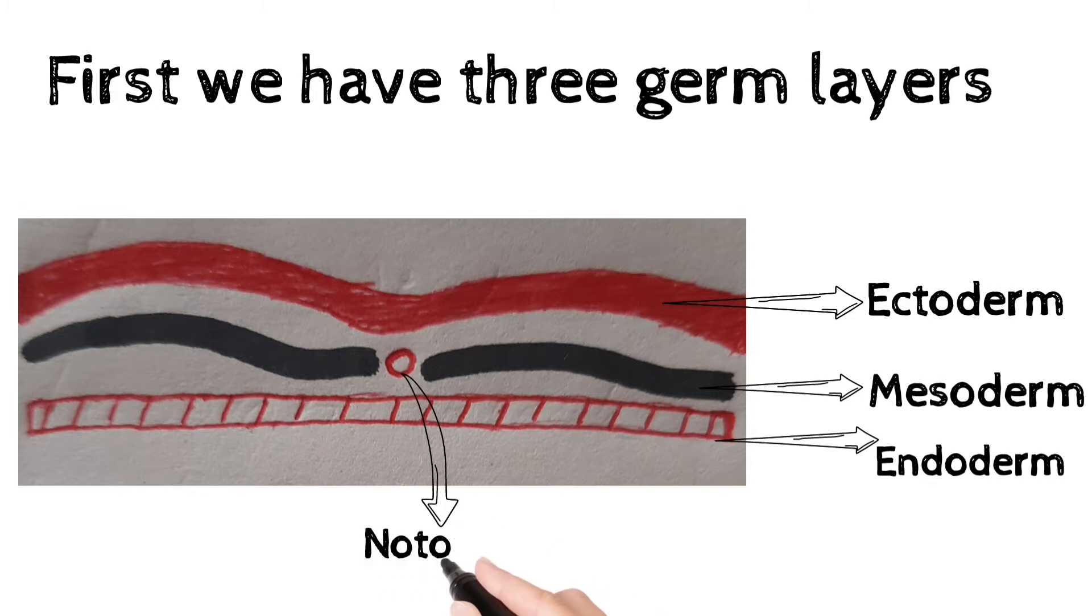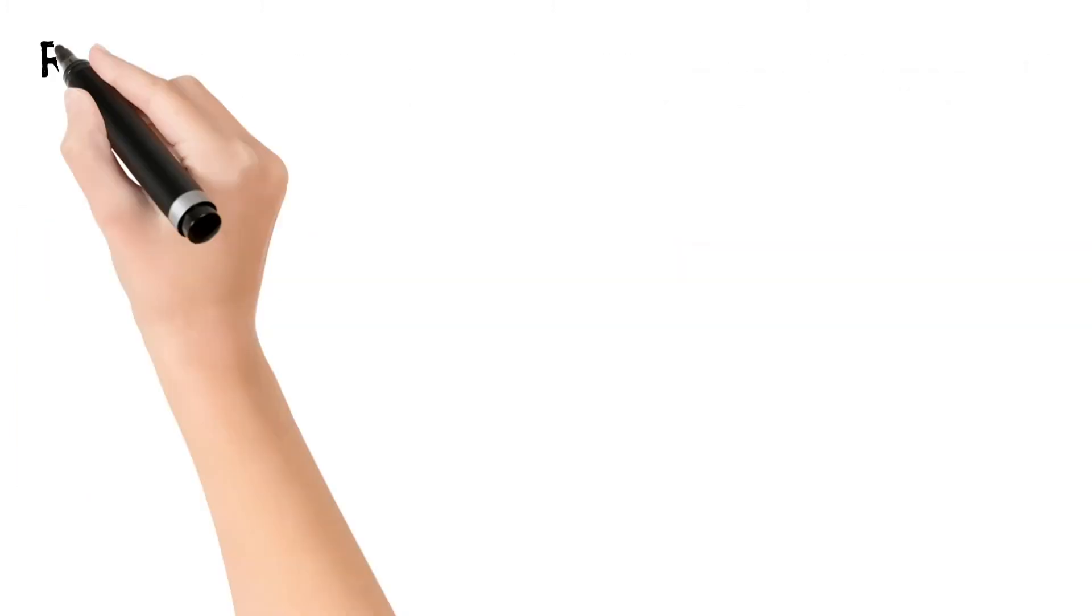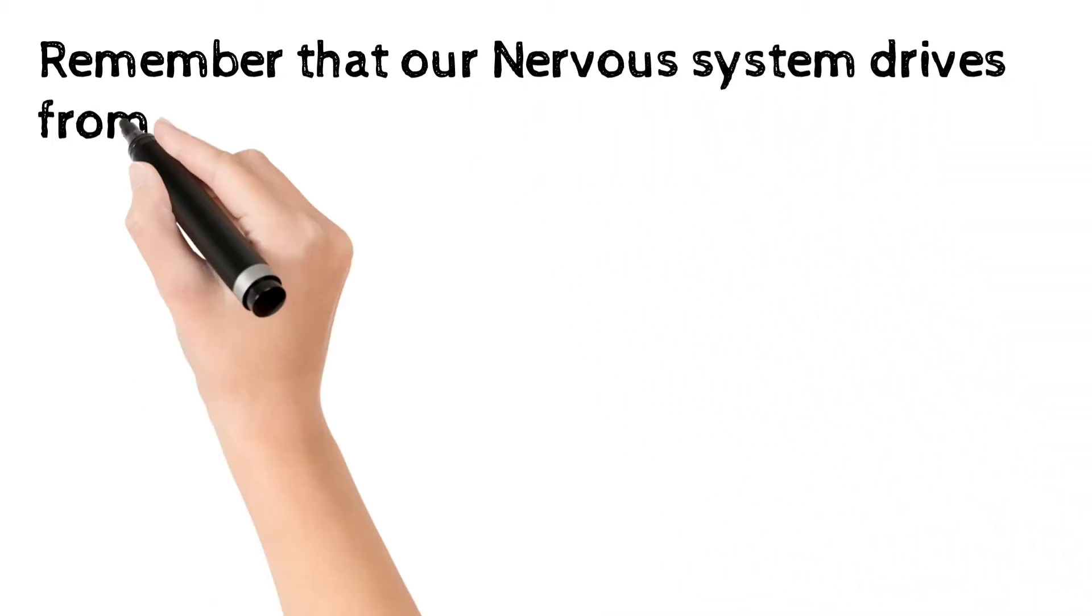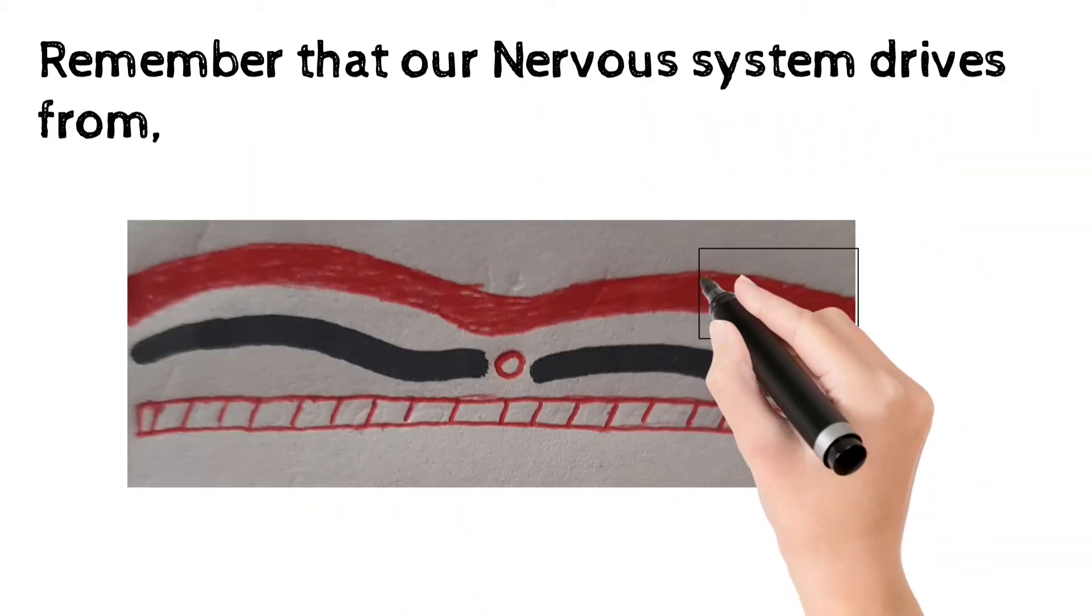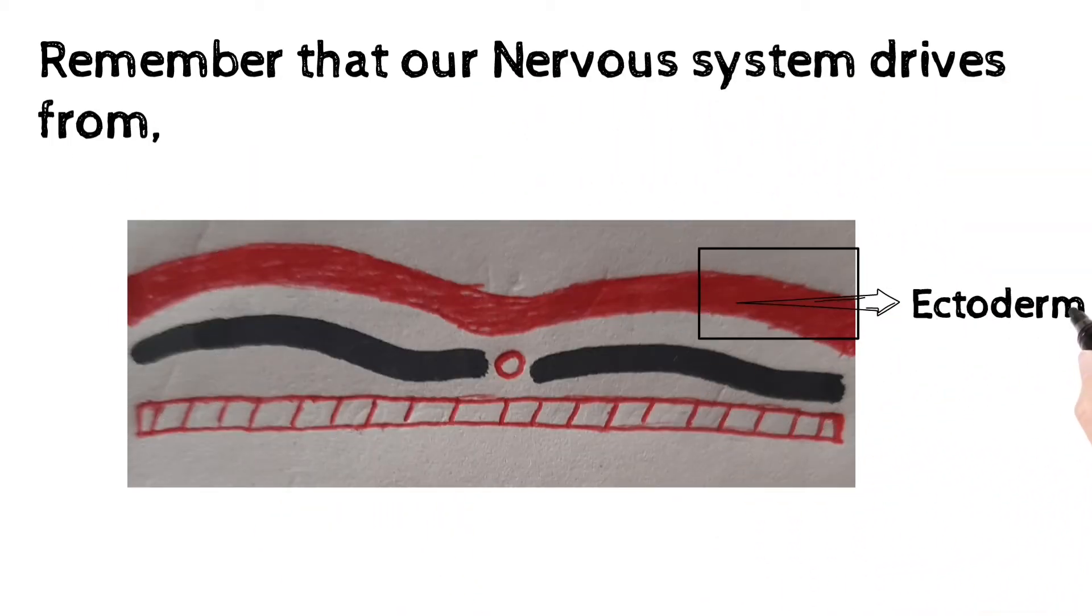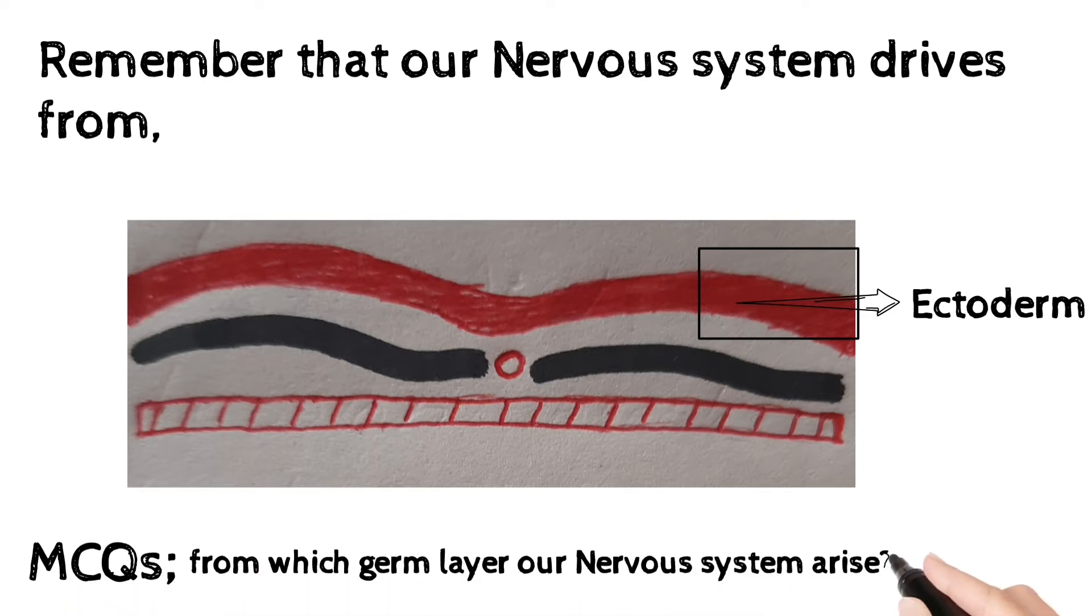That is notochord. Remember, that nervous system derived from ectoderm. Here a question, from which germ layer nervous system derived? Answer is ectoderm.